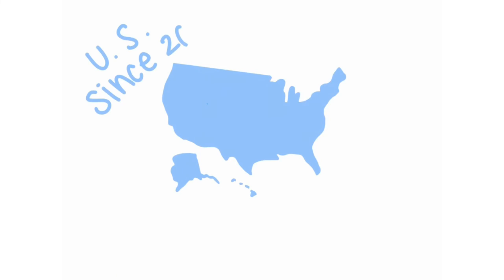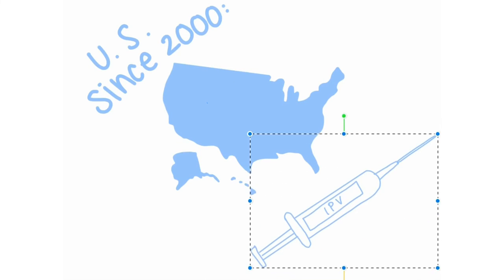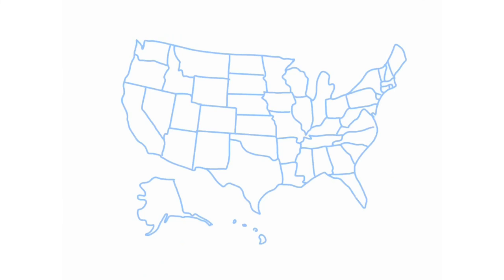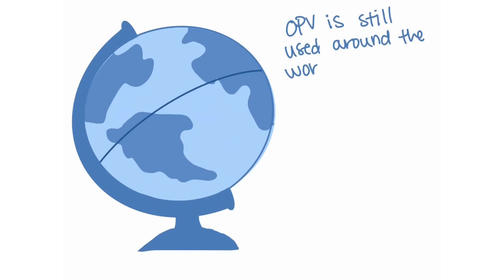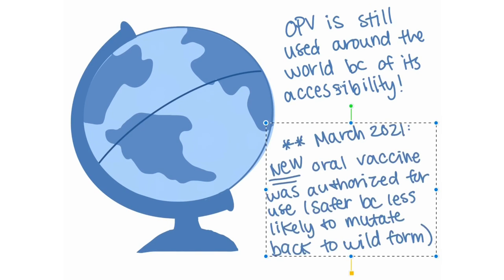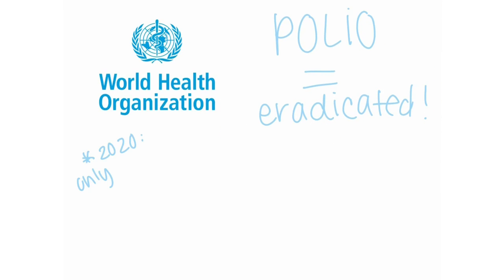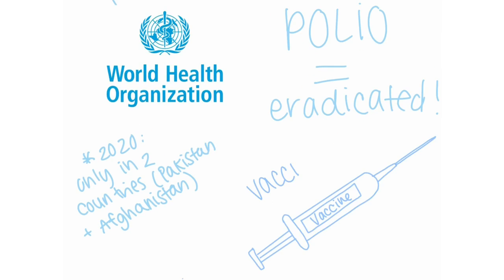Since 2000, only the IPV has been used in the United States to prevent the vaccine-derived polio virus that can occur with the taking of the oral vaccine. Although not federally required, all 50 states require the vaccinations to attend public school. The OPV is still used around the world because of its easy accessibility. Currently, the World Health Organization considers wild polio to be eradicated in the world, and as of 2020, it only affects two countries, Pakistan and Afghanistan, which shows the great efficacy of the vaccines.